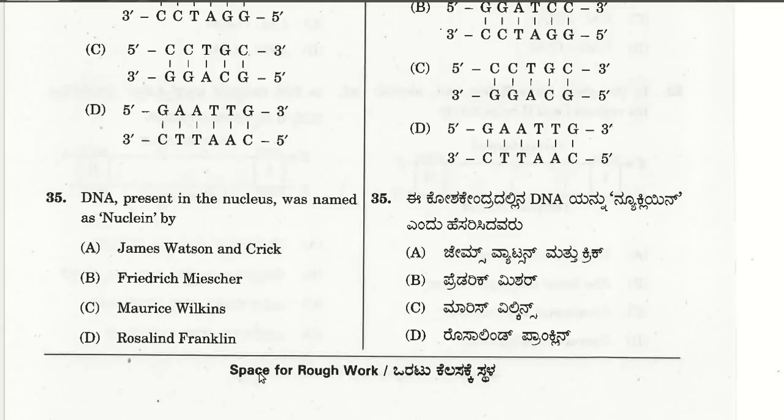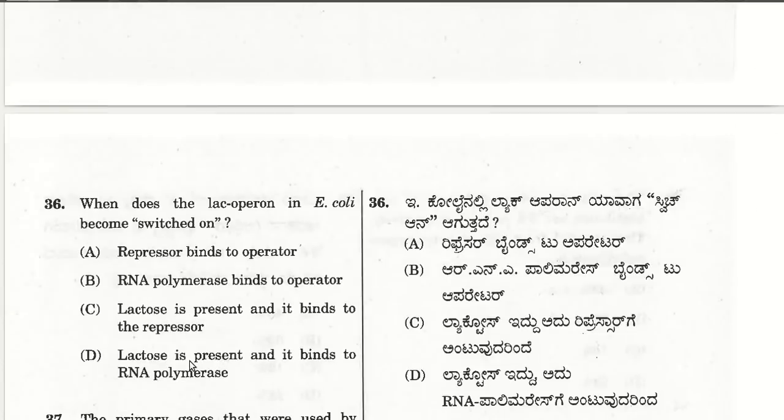The thirty-fifth question: DNA present in the nucleus was named as 'nuclein' by Frederick Miescher. The answer is Frederick Miescher; the second choice is correct.